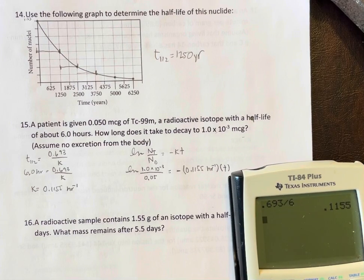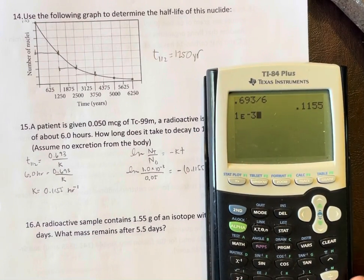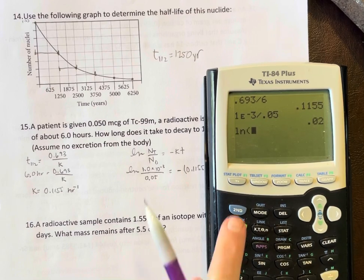Okay, so let's take 1 times 10 to the minus 3 - I don't know if you can see that, there we go - 1 times 10 to the minus 3, divide by 0.05, now let's take the natural log of it.